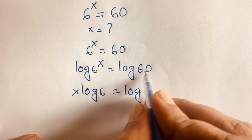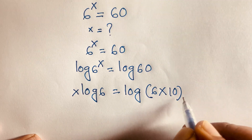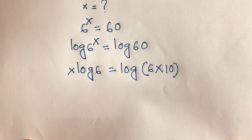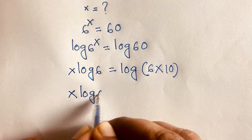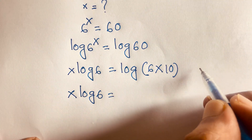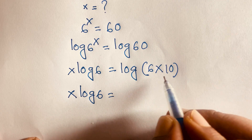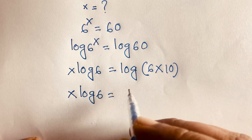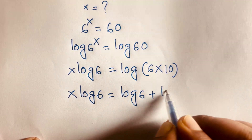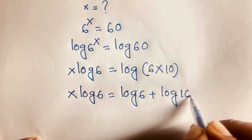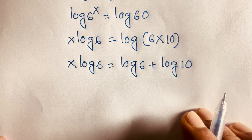Now log 60 can be written as log of 6 times 10. Using the log product rule — log(a·b) equals log a plus log b — it becomes log 6 plus log 10. Then I divide both sides by log 6.